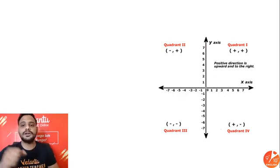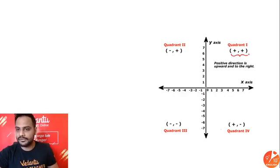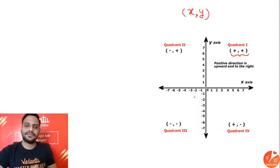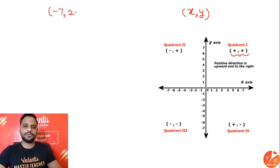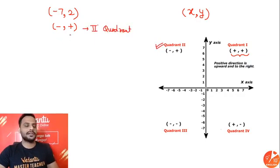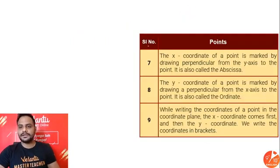In all four quadrants, we can identify the signs of the coordinates. In Quadrant 1, both x and y are positive. In Quadrant 2, x is negative and y is positive. In Quadrant 3, both are negative. In Quadrant 4, x is positive and y is negative. For example, the point (−7, 2) lies in Quadrant 2, and (−2, −3) lies in Quadrant 3.